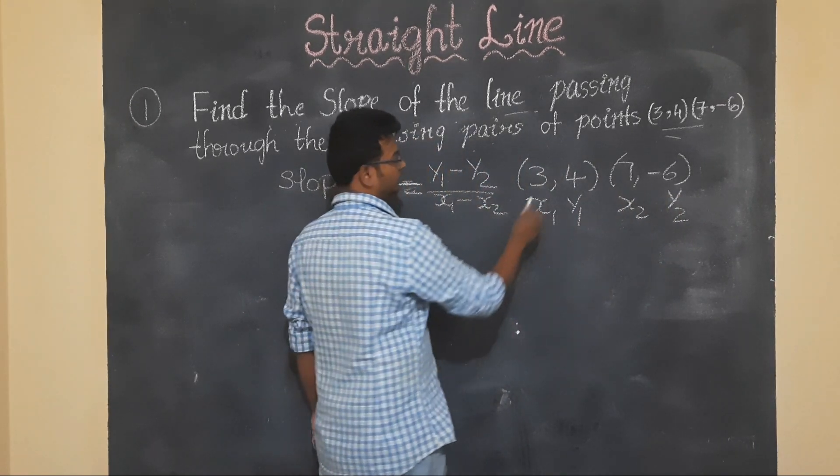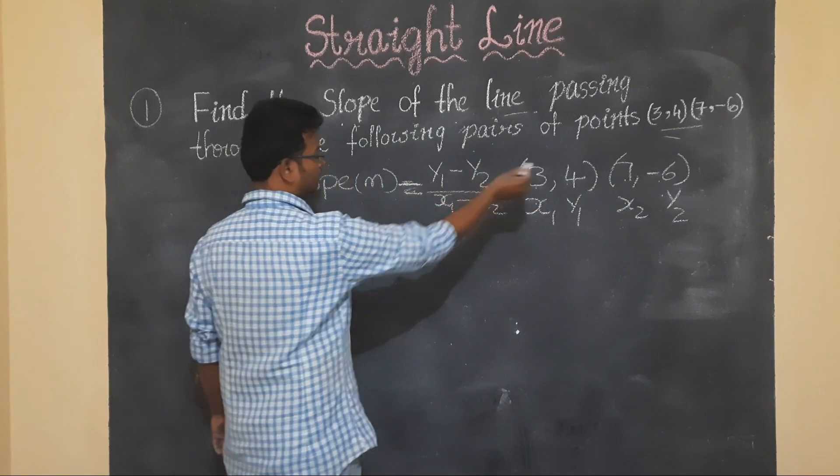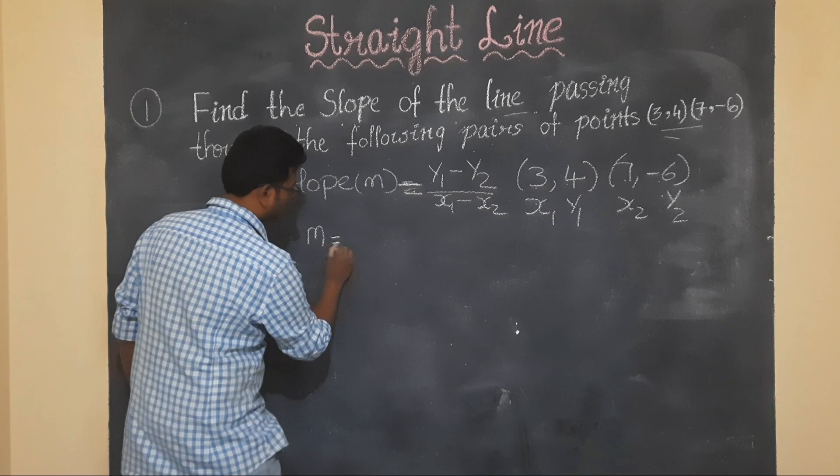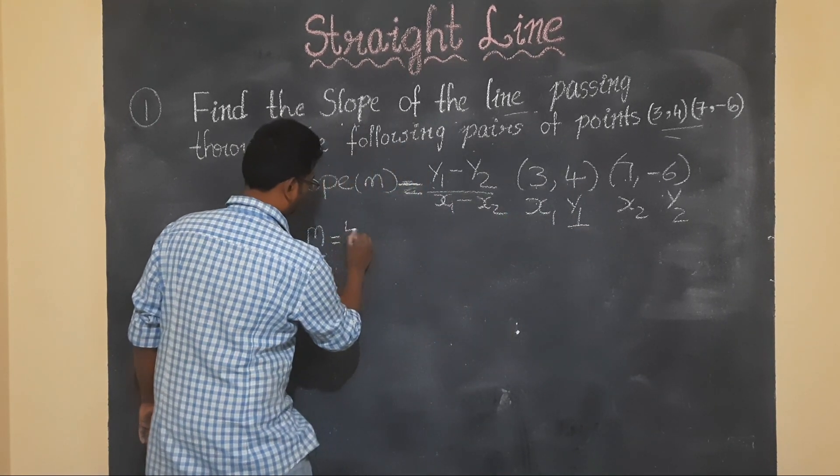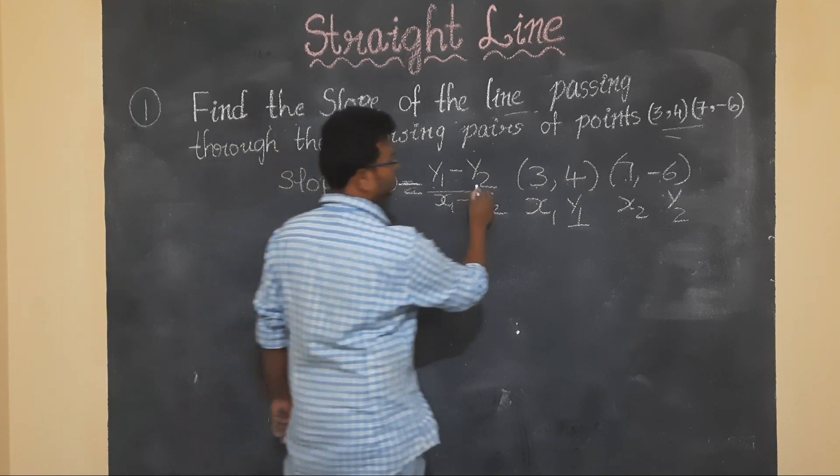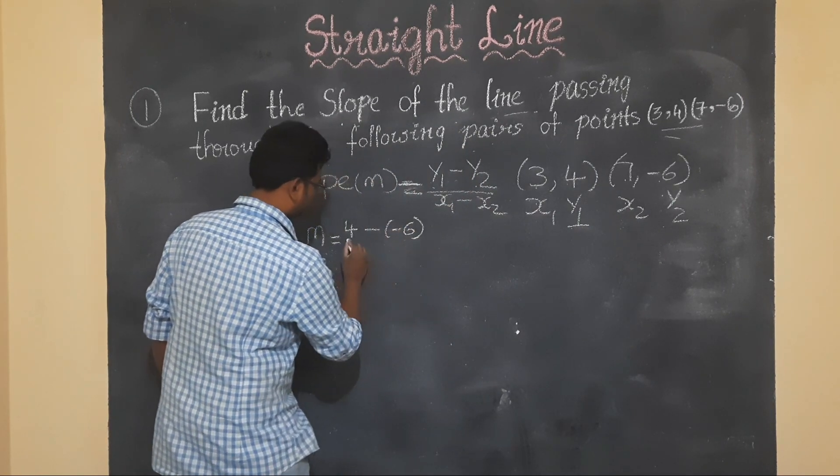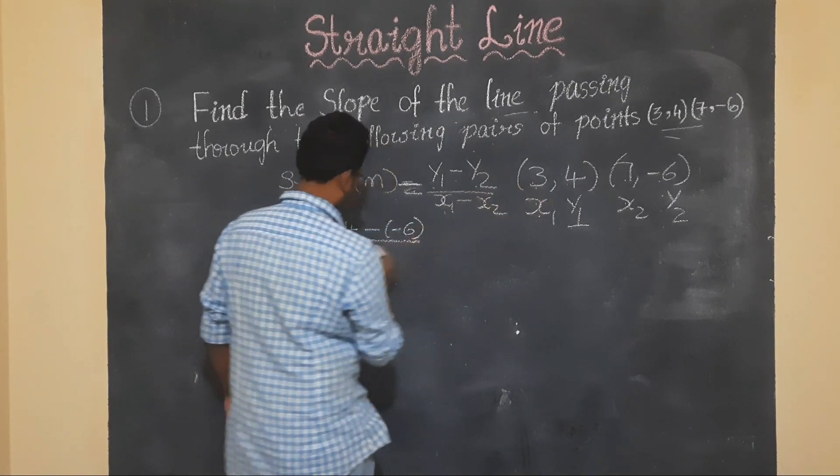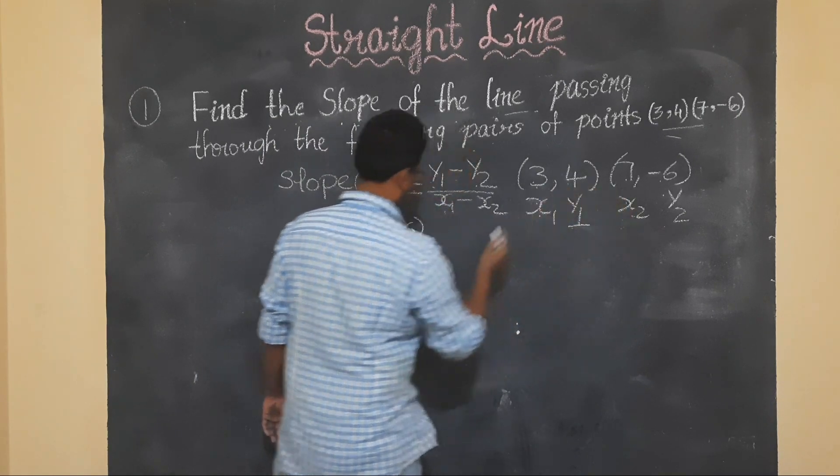Clear students? This is x1, this is y1, this is x2, this is y2. Slope m is equal to y1, y1 is 4, minus y2 which is minus 6, by x1 value which is 3 minus x2 value which is 7.